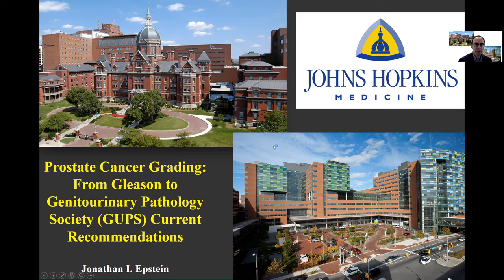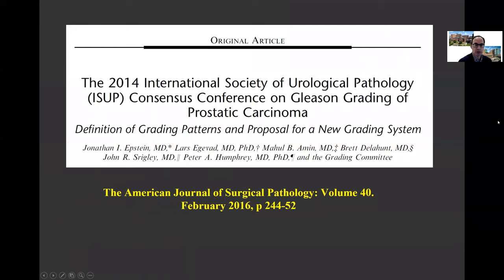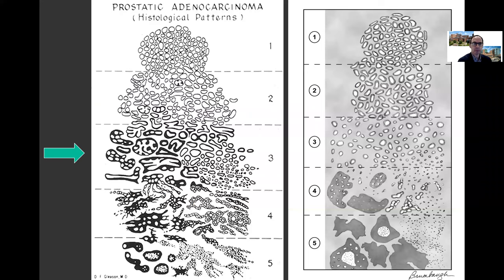I will be discussing prostate cancer grading from Gleason to the Genitourinary Pathology Society, or GUPS, current recommendations. Gleason grading began in 1967 and continued to 1973. Not much was done in terms of changing Gleason grading until the ISUP International Society of Urological Pathology Consensus Conferences in 2005 and 2014, both of which I was fortunate to have led.